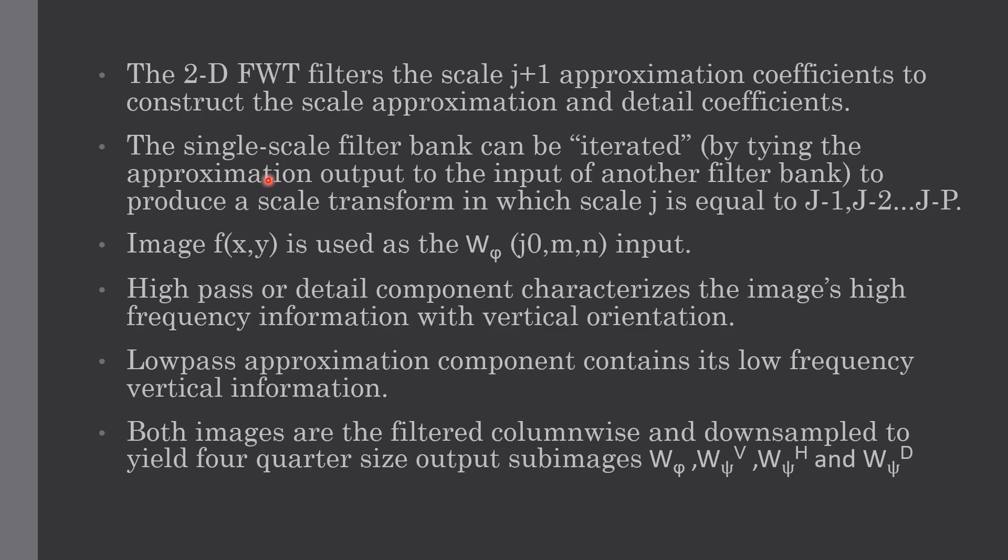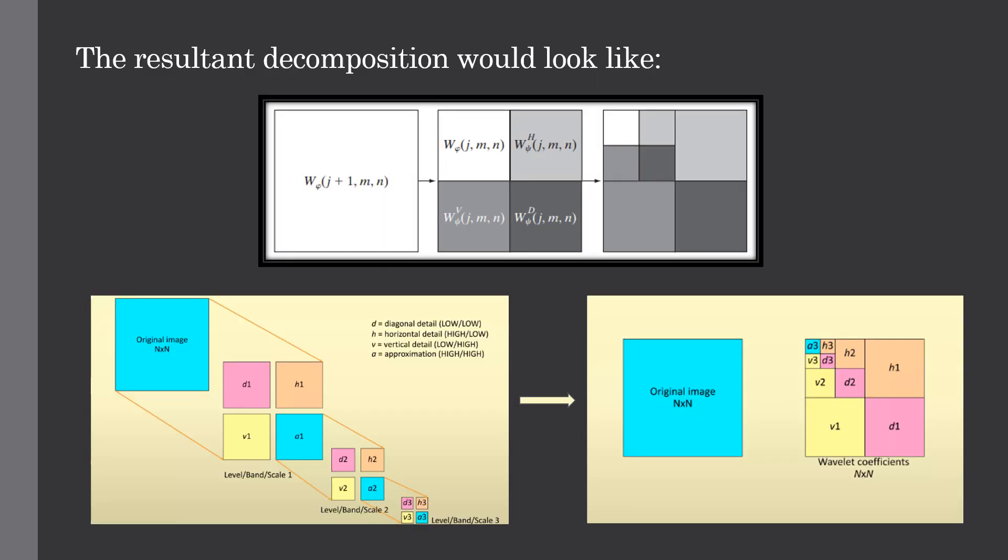The single scale filter bank can be iterated to produce a scale transform in which scale j can be equal to j-1, j-2 and so on to j0. So the resultant decomposition would look something like this.